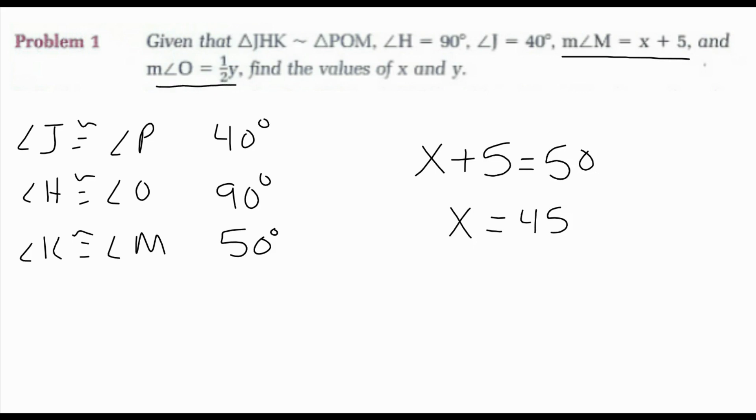And I know the measure of angle O is one-half Y. O is 90 degrees, so one-half Y will equal 90, so Y is 180. So I have X equals 45 and Y equals 180.